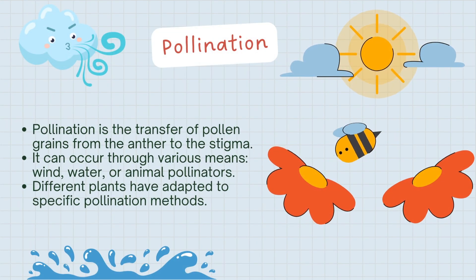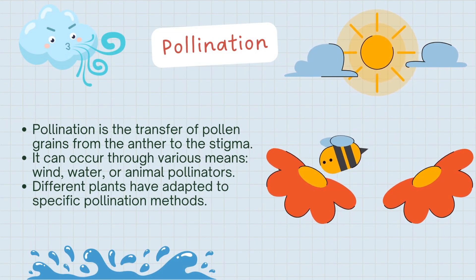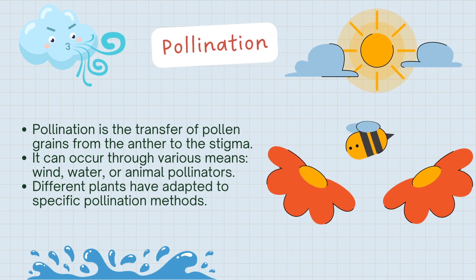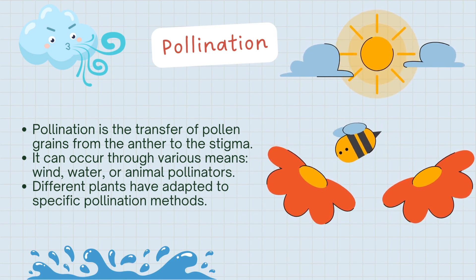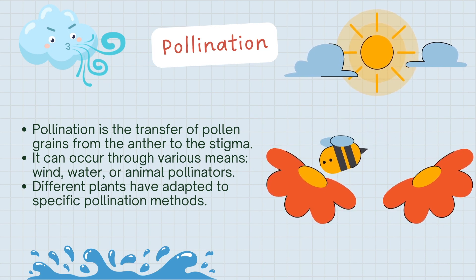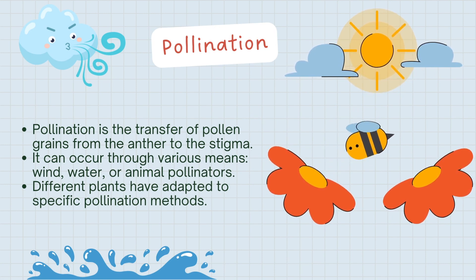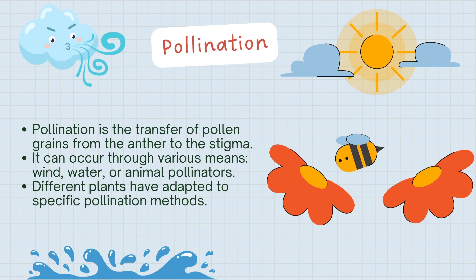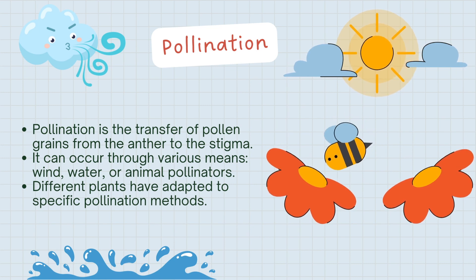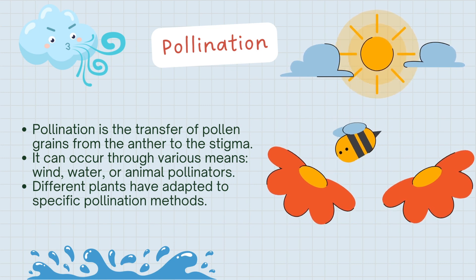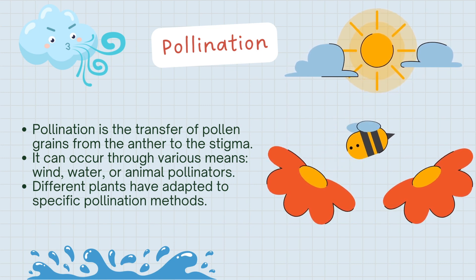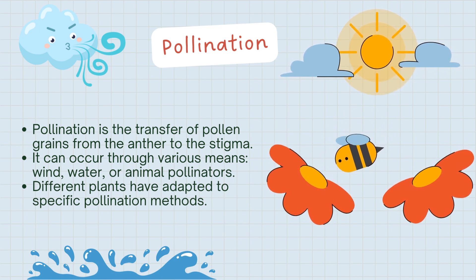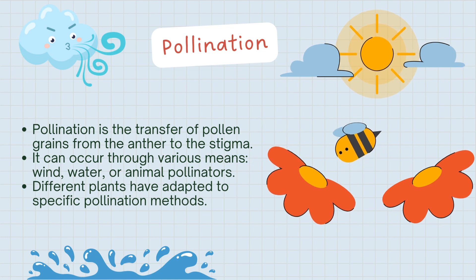Pollination is the crucial step in plant reproduction. It involves the transfer of pollen grains from the anther to the stigma. This process can occur through various means, including wind, water, or animal pollinators.